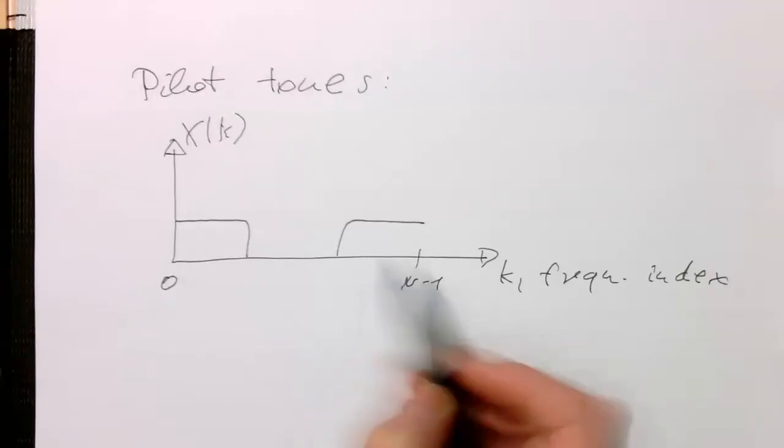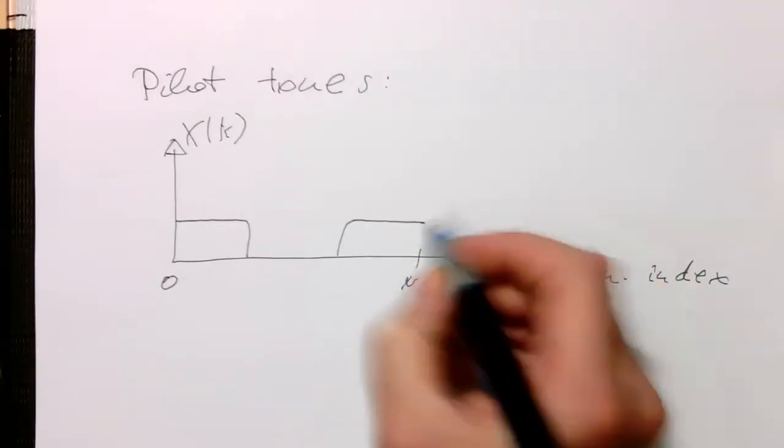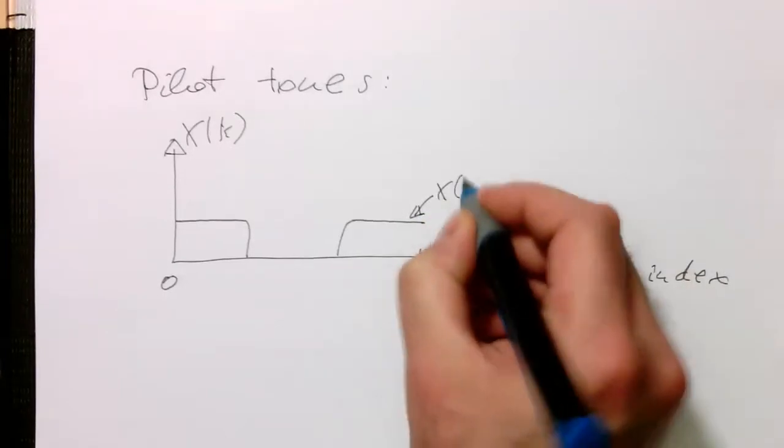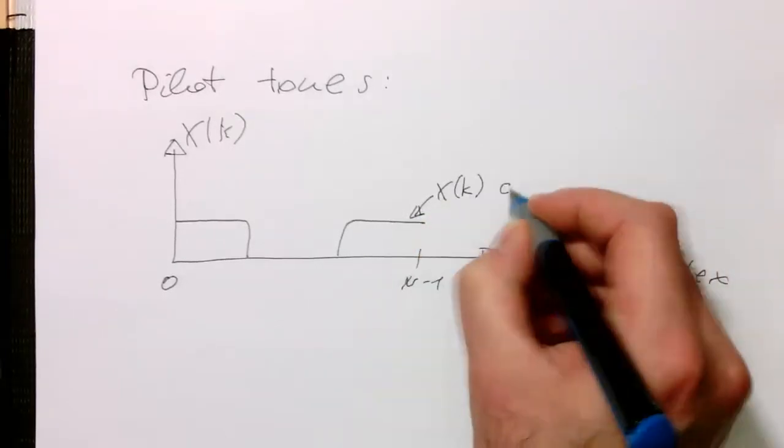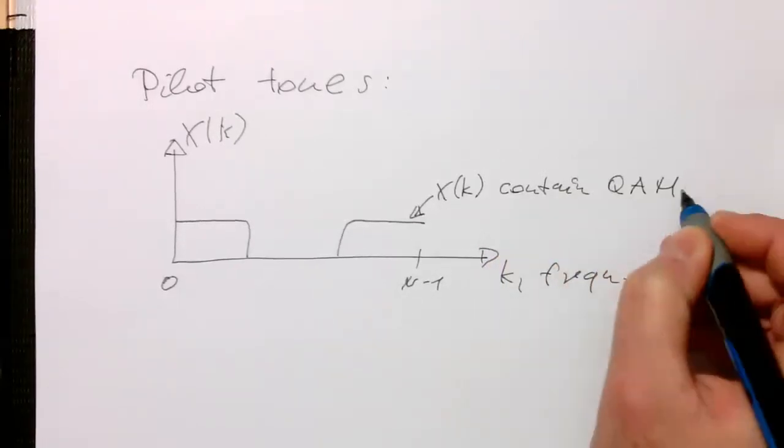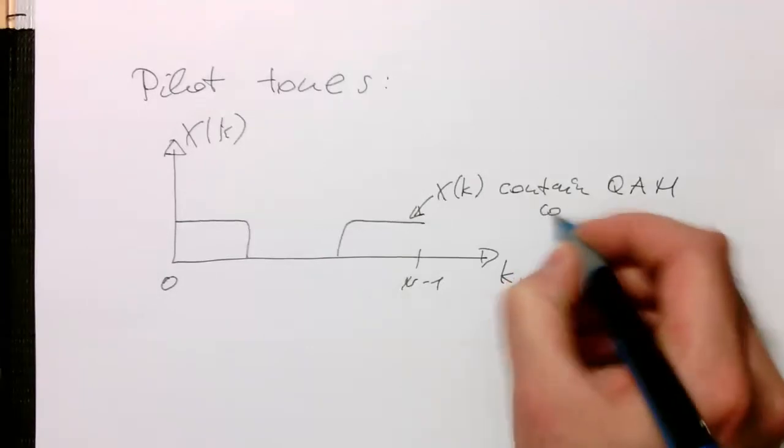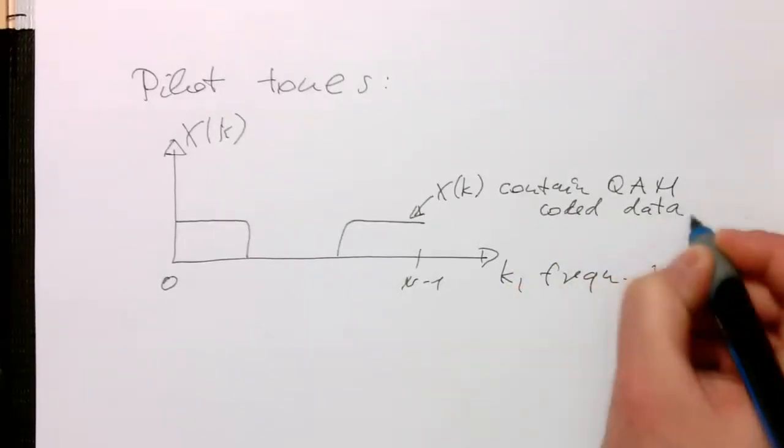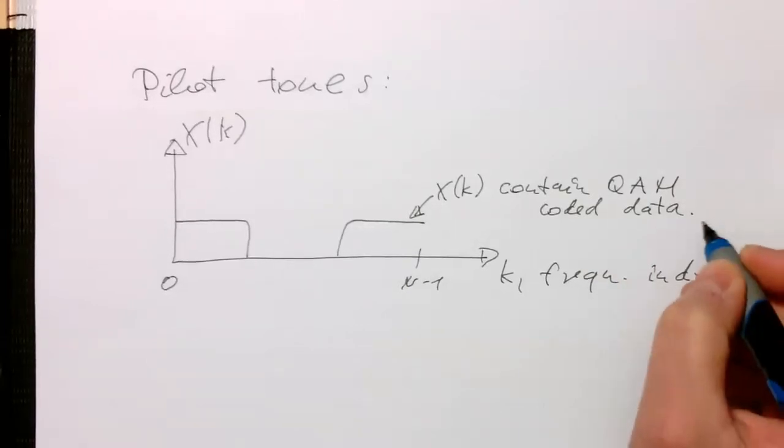so all these xk's here, they contain crom-coded data, what we discussed before. So now what we do is,